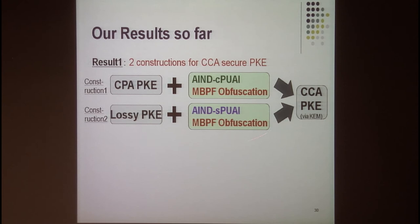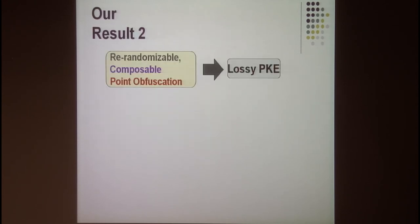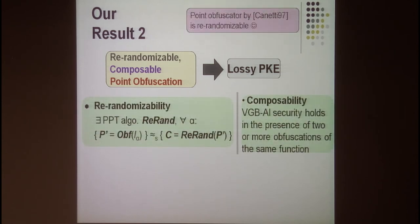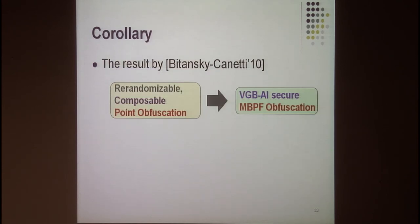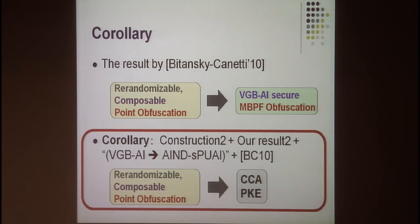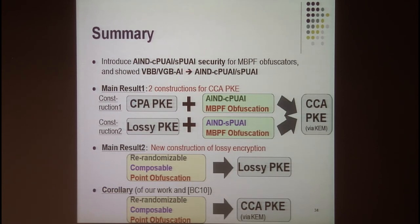To summarize what has been achieved: we have two CCA-secure constructions. Finally, we construct lossy encryption from re-randomizable composable point obfuscation, which is very simple. And as shown in the Bitansky-Canetti paper, from this obfuscation we can achieve MBPF obfuscation. Combining everything, we achieve CCA-secure encryption only from re-randomizable composable point obfuscation. In conclusion, we introduced a new security notion for MBPF obfuscators, showed two new constructions of CCA-secure encryption, and constructed Lossy encryption from point obfuscation. Combining everything, we achieve CCA-secure encryption only from composable and re-randomizable point obfuscation.